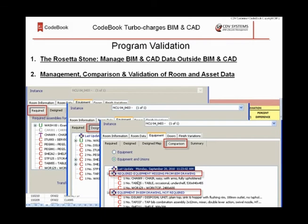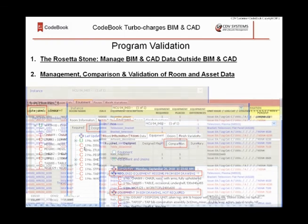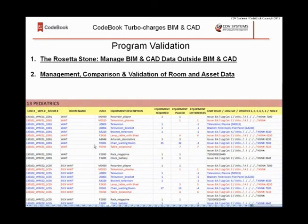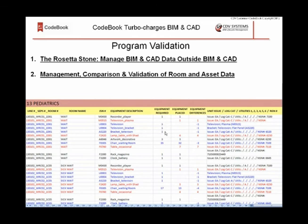Again, it turbocharges BIM and CAD. You can also create out of CodeBook a report that describes the discrepancies. Here's a report directly out of CodeBook describing the pediatric department — here's the waiting room and all the pieces of equipment required in that room. The values in black represent a perfect match: the required equipment in the program and the equipment placed in AutoCAD or Revit match perfectly. The values in blue represent equipment that's in the required list but does not yet exist in the Revit model or AutoCAD file — it's required but hasn't been placed in the model.